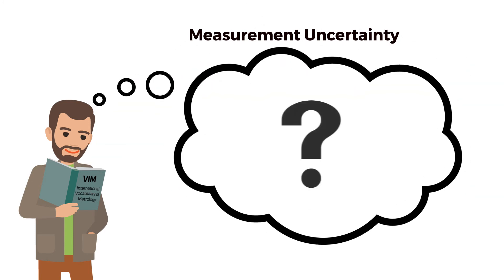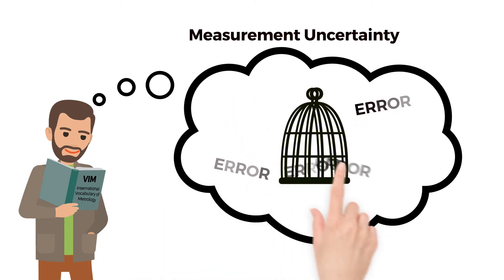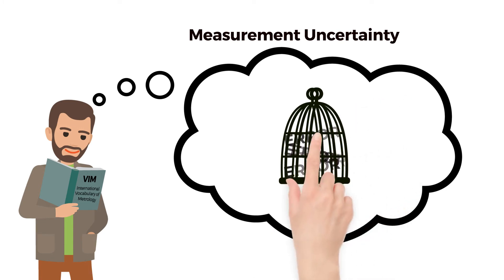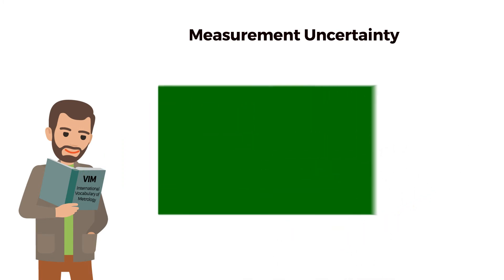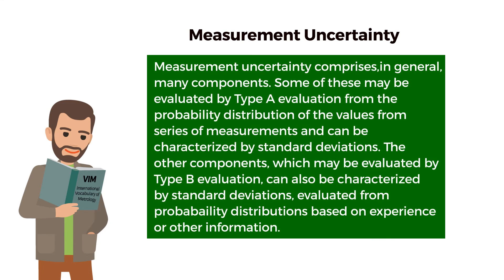Since we do not make perfect measurements, we must consider the error sources. When all the errors are captured properly, we can describe how well we made the measurement, or what our measurement uncertainty is. Some components of measurement uncertainty can be evaluated by type A evaluation or type B evaluation.